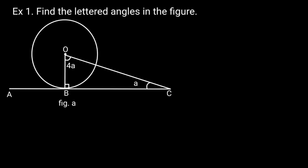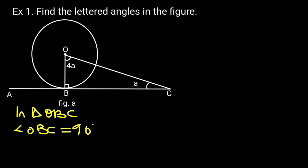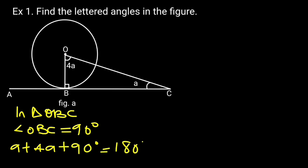Find the lettered angles in the figure. Solution: In triangle OBC, angle OBC is equal to 90 degrees. Reason: Angle at the point where the tangent touches the radius is 90 degrees. So A plus 4A plus 90 degrees is equal to 180 degrees. Reason: Sum of angles in a triangle is equal to 180 degrees.